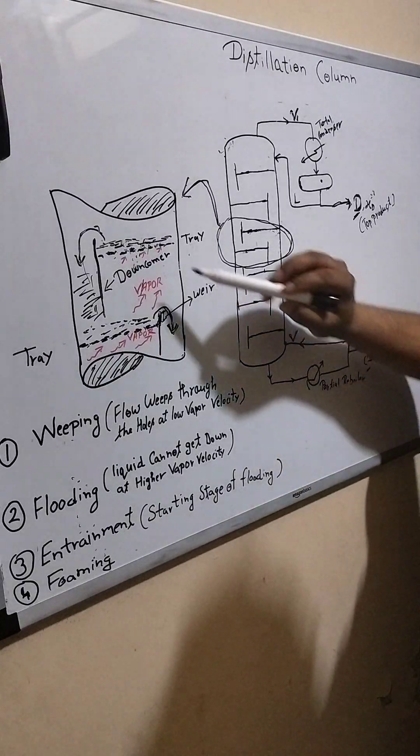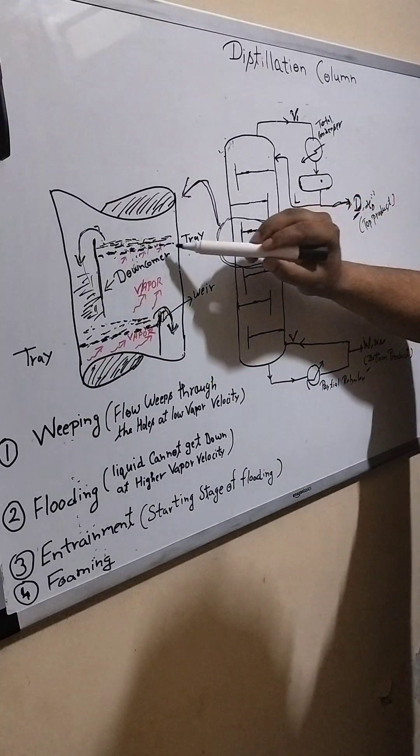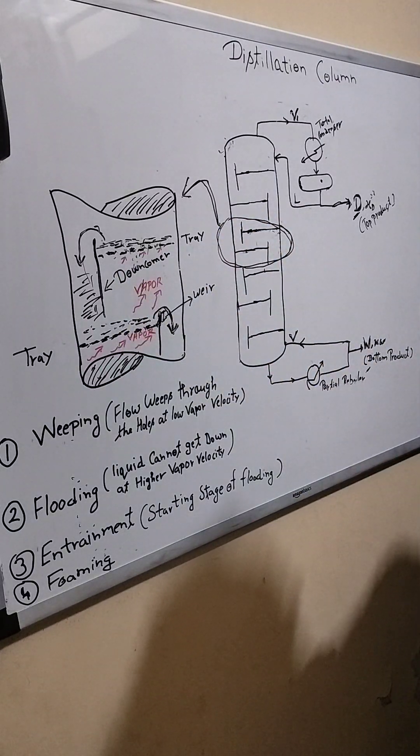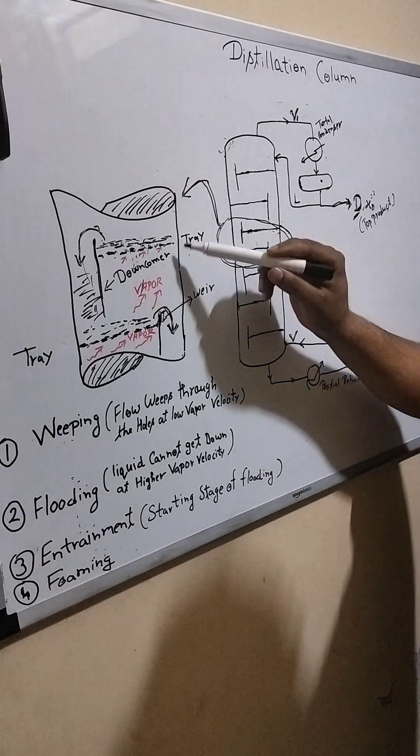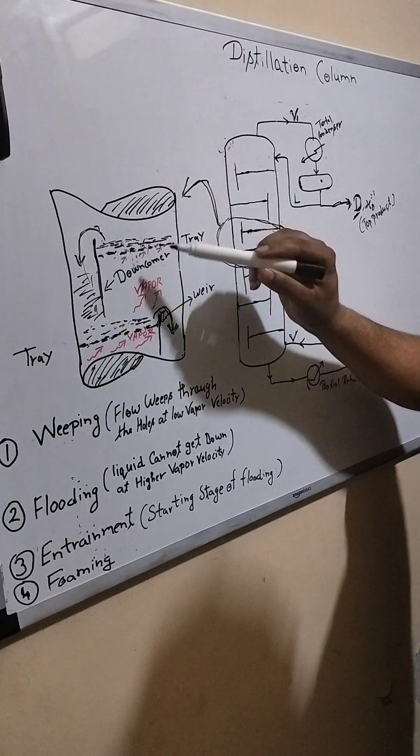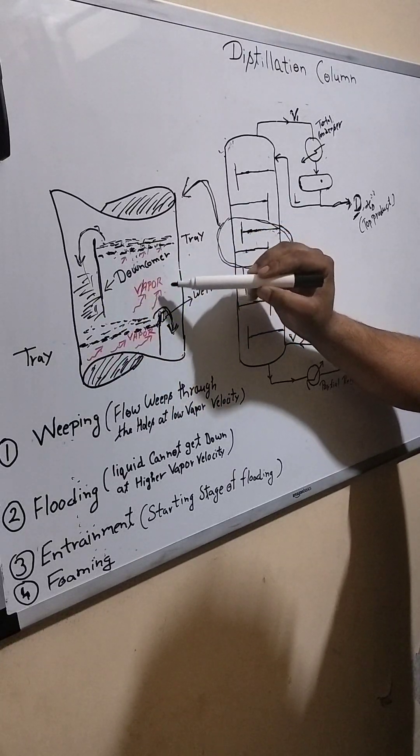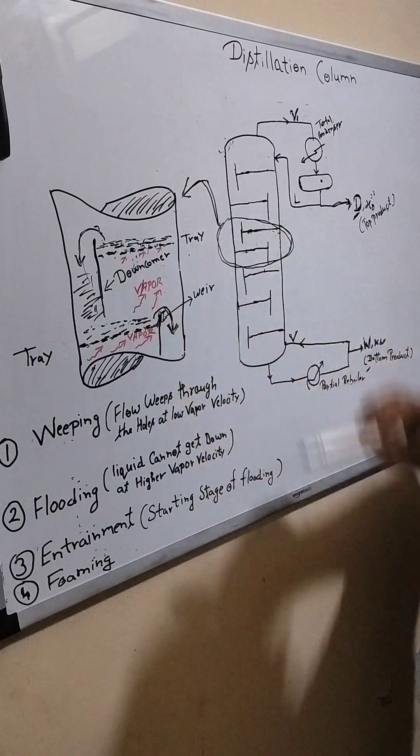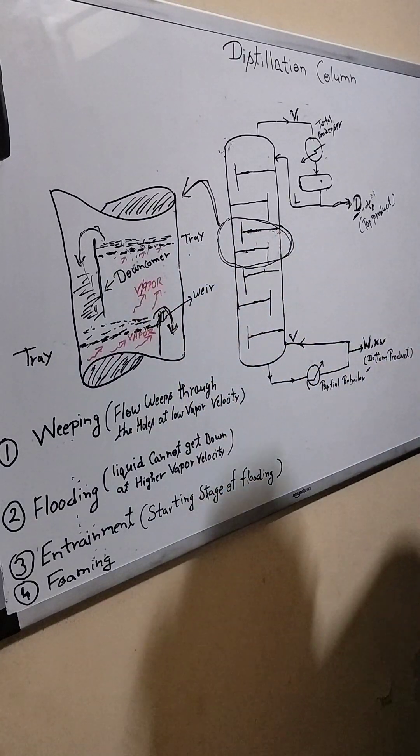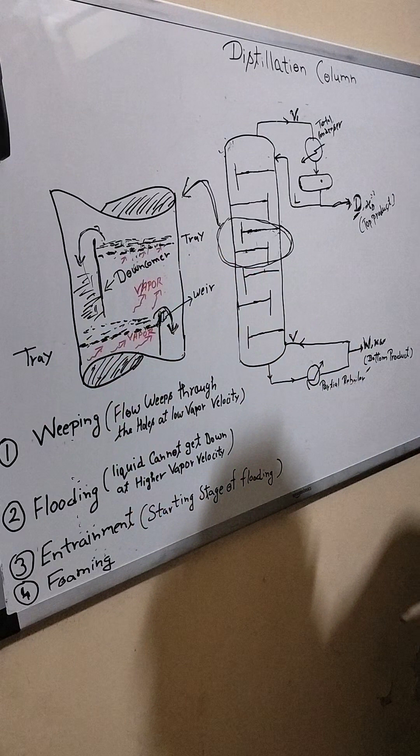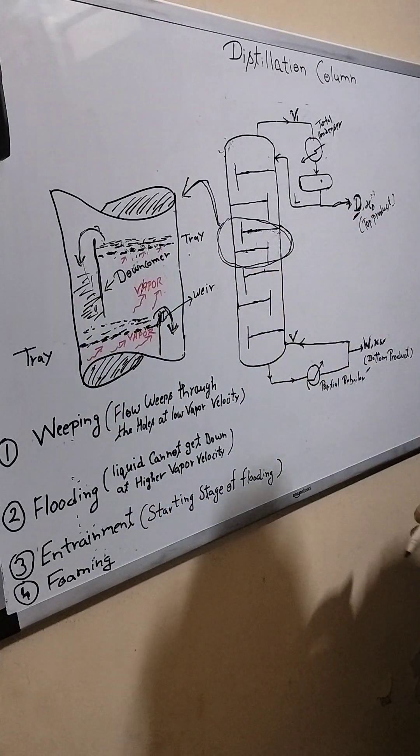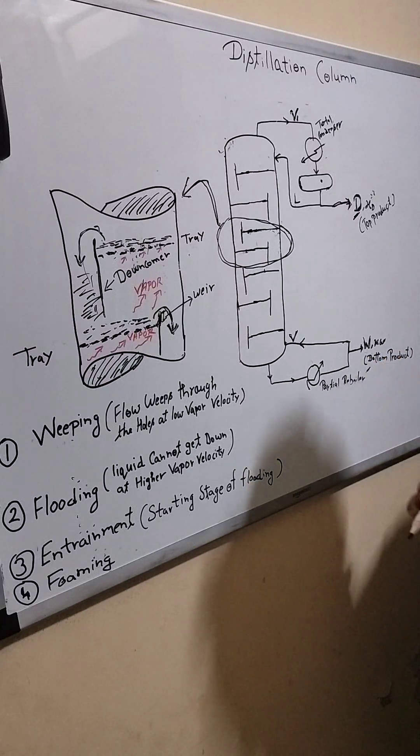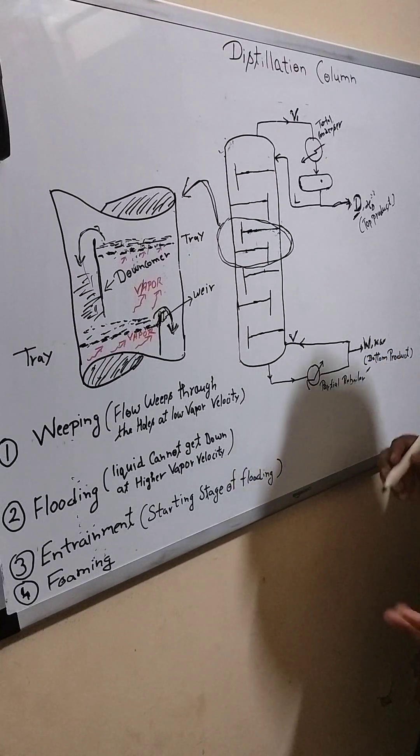In general, why are we using plates? The purpose of the plates is to increase the surface area. By using this tray, we increase the surface area so that the contact between the vapor and the liquid will be more, so we will get good mass transfer along the surface. In place of tray, we can also use some packing, so the purpose for packing is also to increase the surface area.